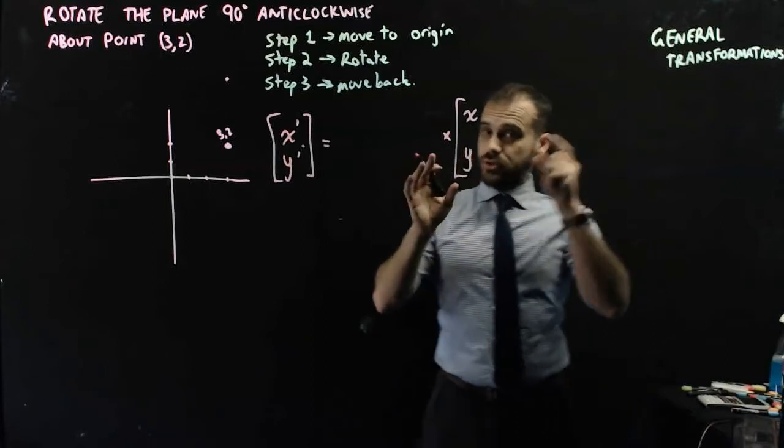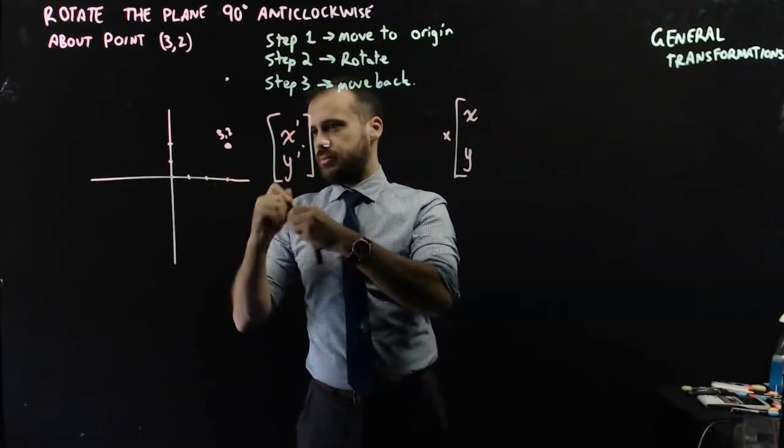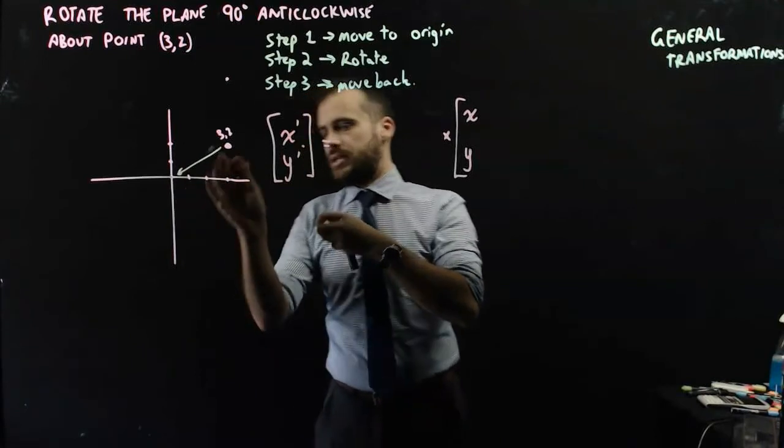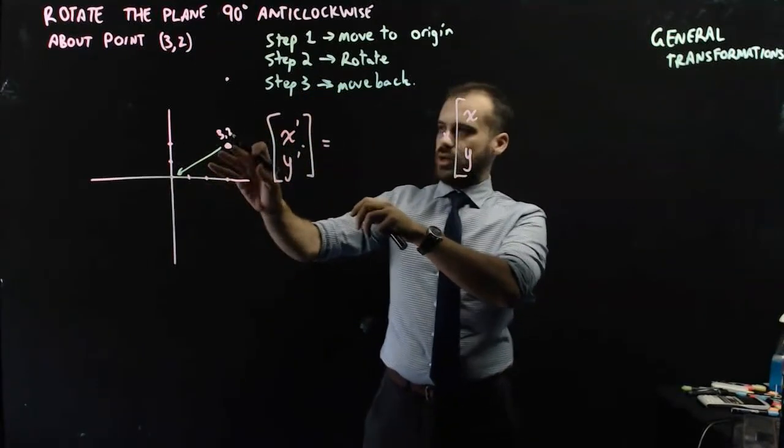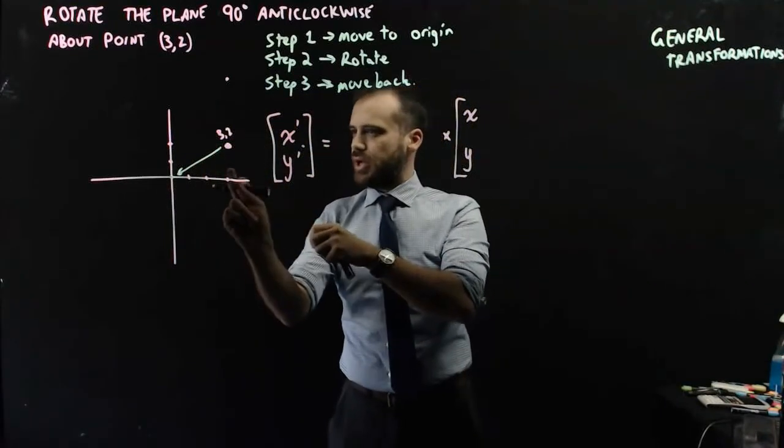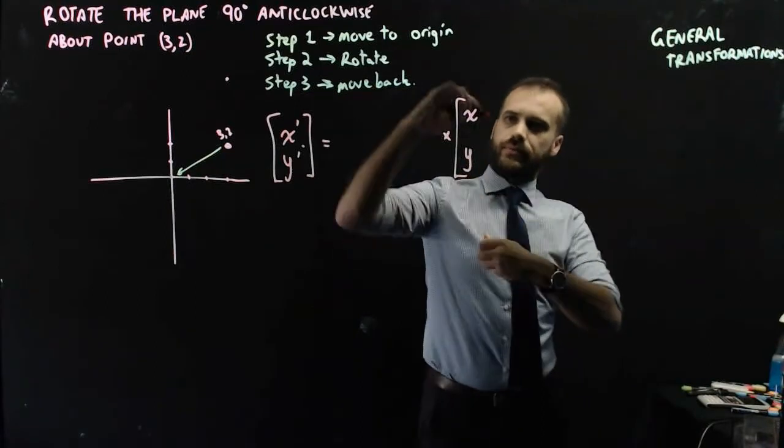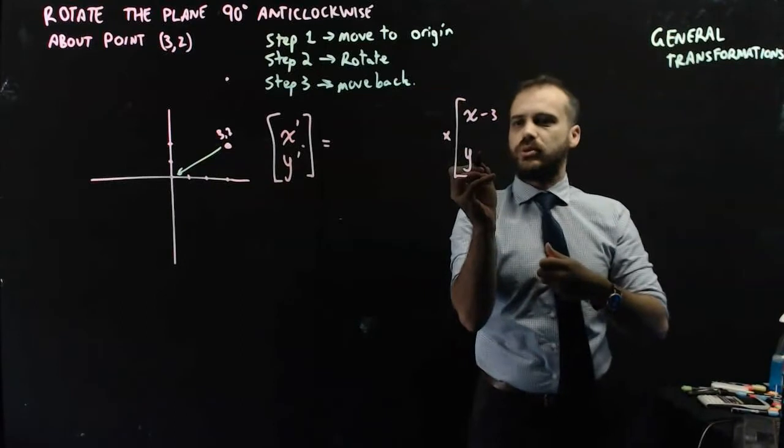Okay, but I'm going to need to move the plane to there. And to move the plane to there, to the origin, to move the rotation point to the origin, I'm going to have to subtract 3 from x and I'm going to have to subtract 2 from y.